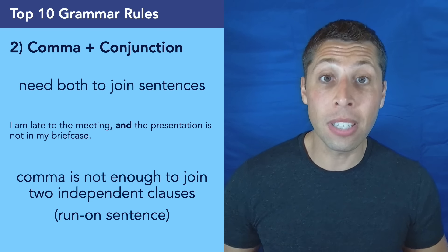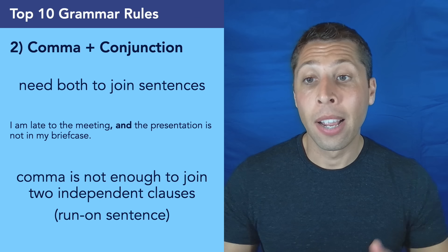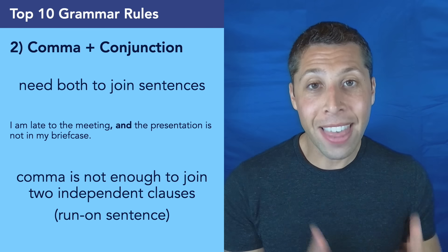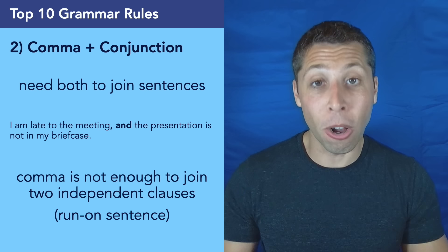Usually a conjunction by itself is not enough and a comma by itself is not enough to join two complete sentences. So you can see here in the example, I am late to the meeting. That's a sentence. We could end a period right there. The presentation is not in my briefcase. That's a sentence. It could stand alone. So if we're going to join them together with a conjunction, we also need the comma.